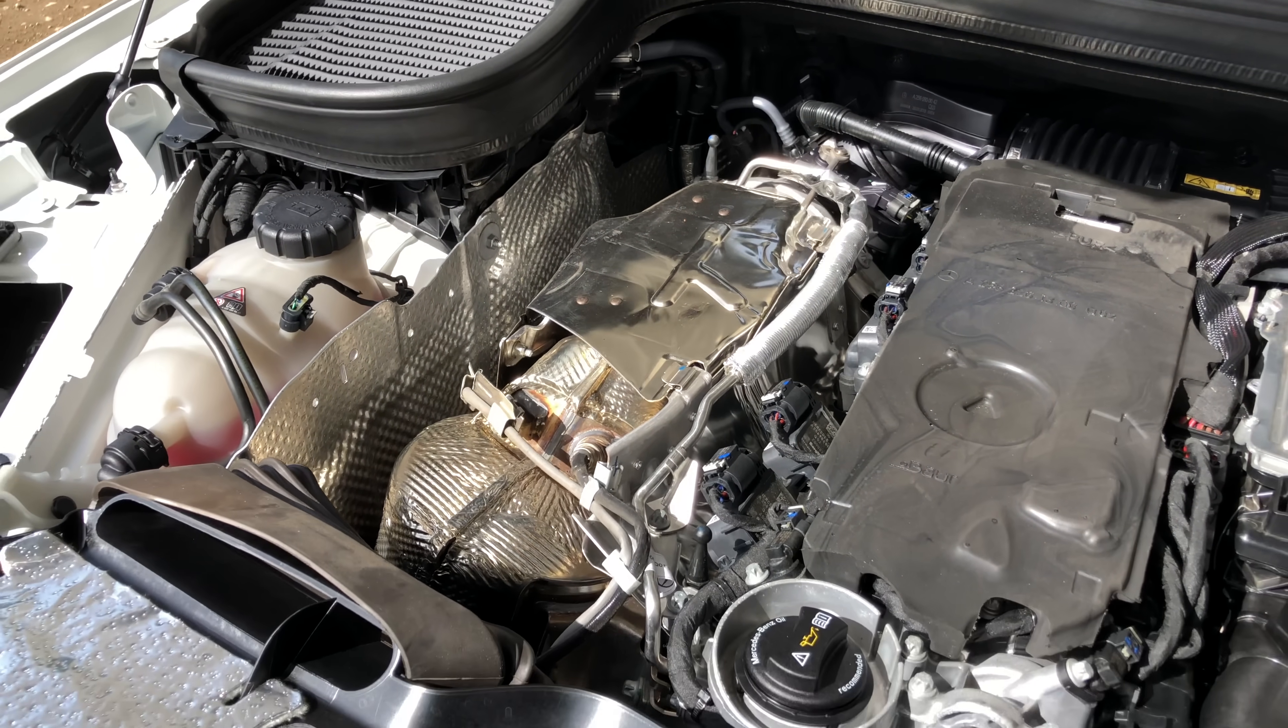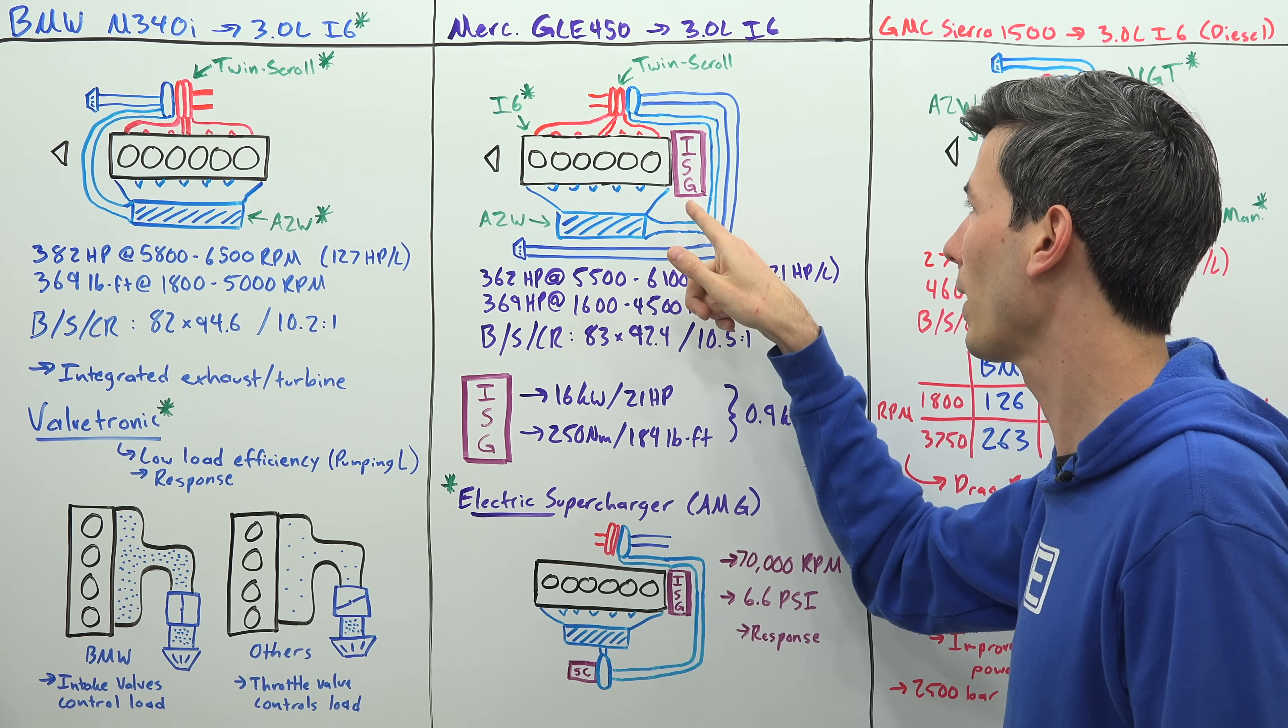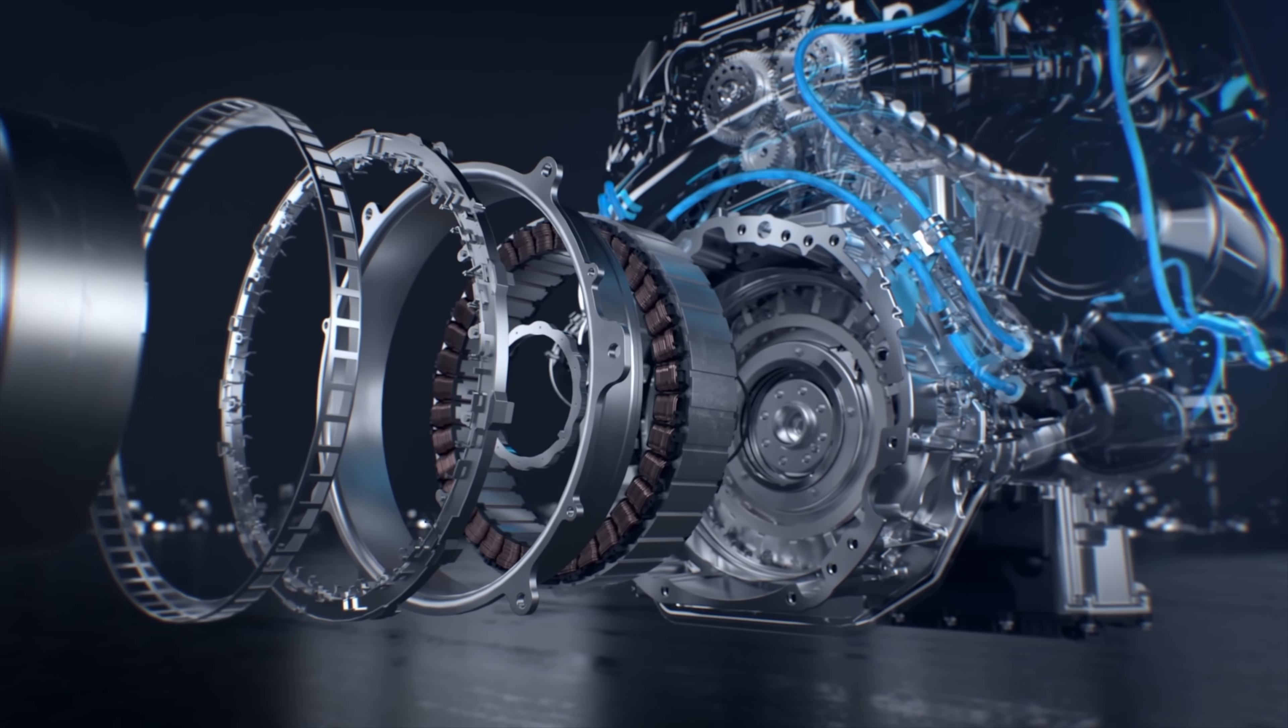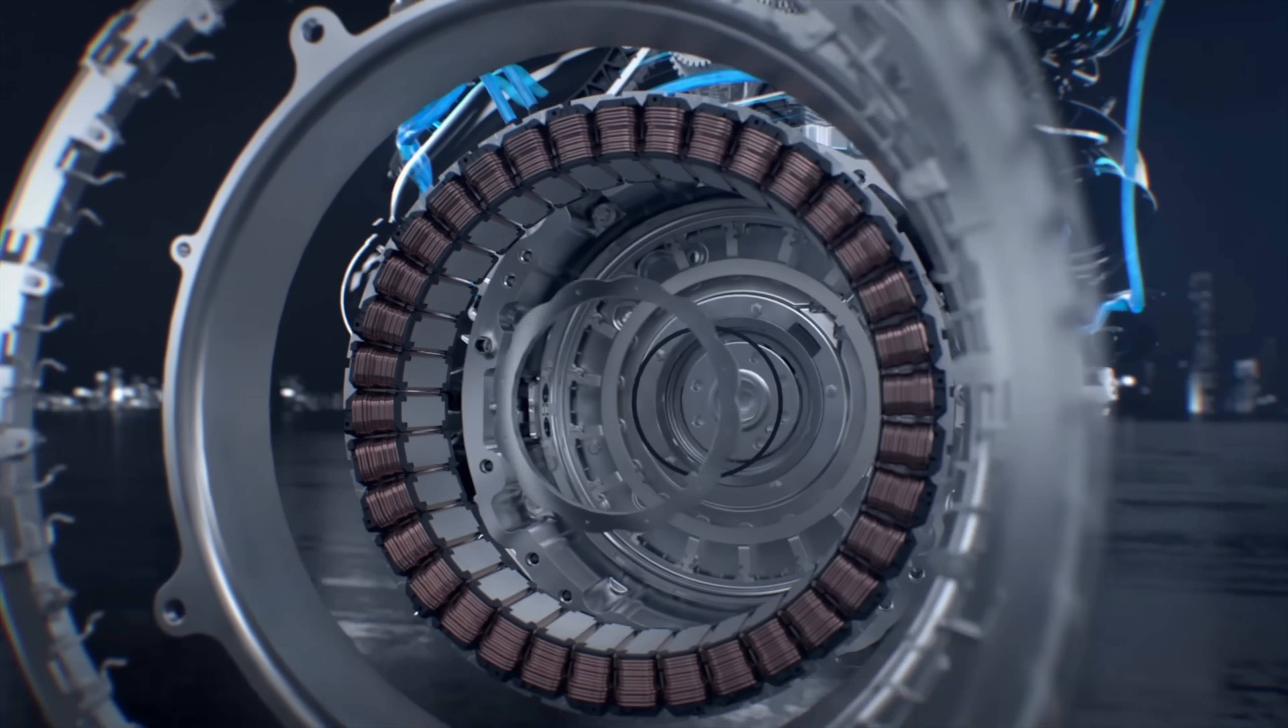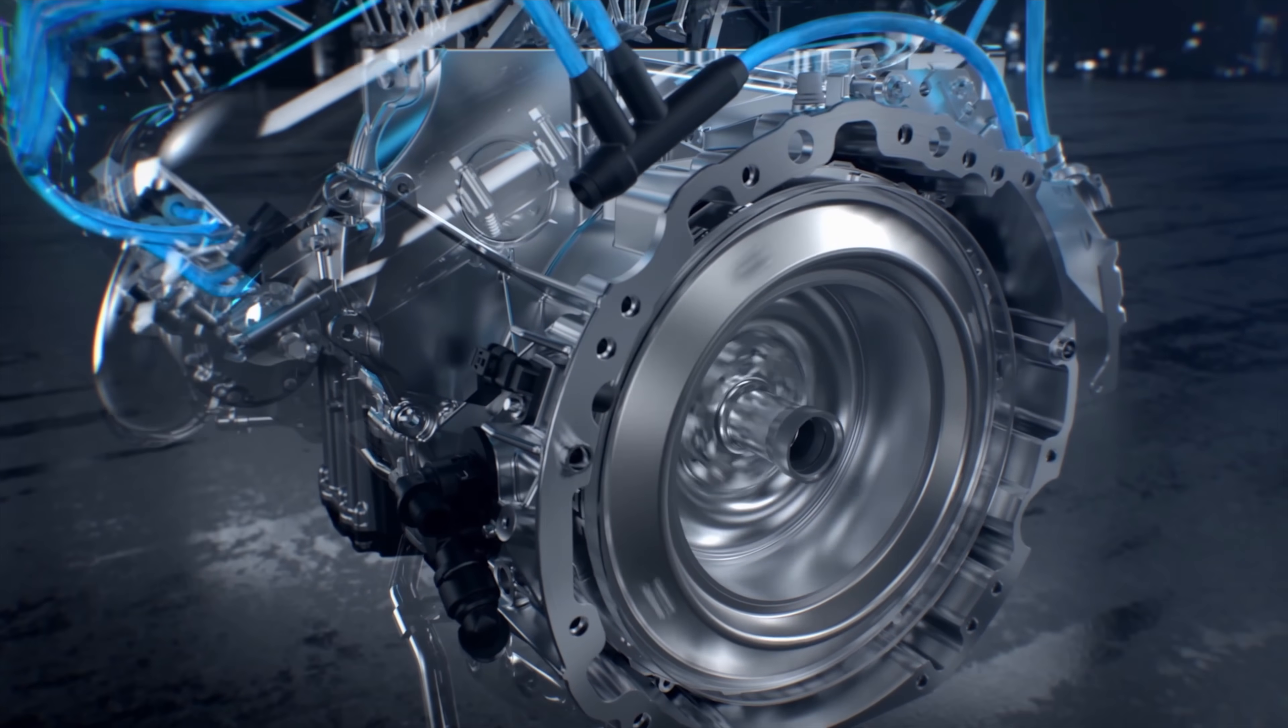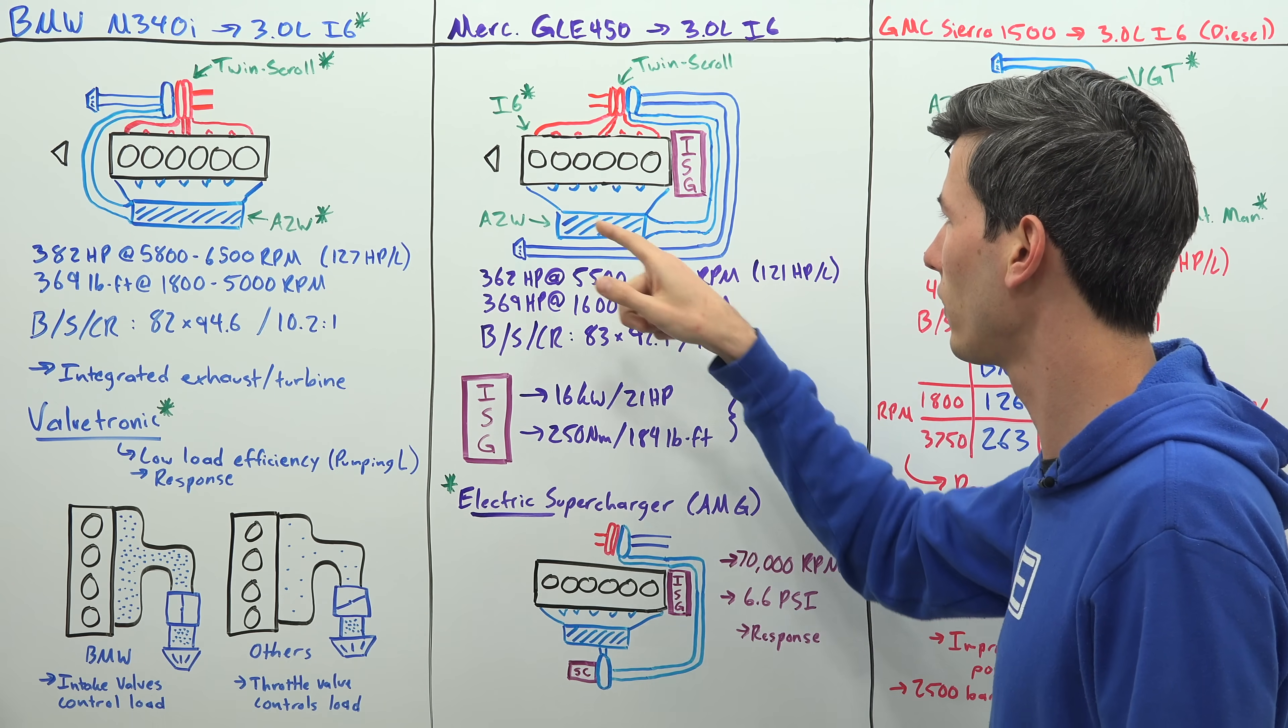The two major differences here: first of all we have included an integrated starter generator. So there's an electric motor slapped onto the end of the engine where you would have the flywheel or torque converter in that location between that and the rest of the transmission.